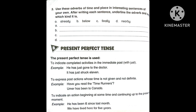Next, the present perfect tense is used to express past actions whose time is not given and not definite — actions in the past where the time is unspecified or indefinite. Examples given: 'Have you read the Time Runners?' and 'Omar has been to Canada.'